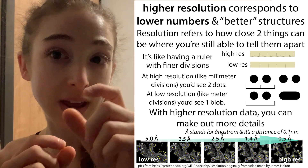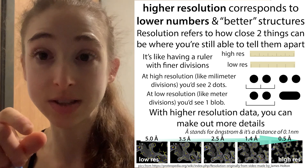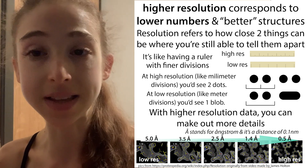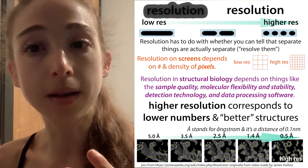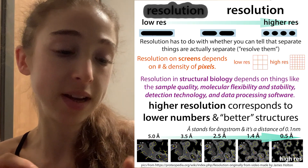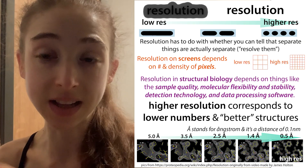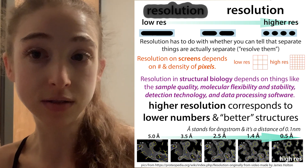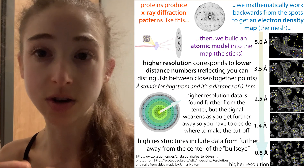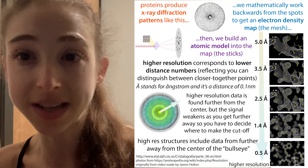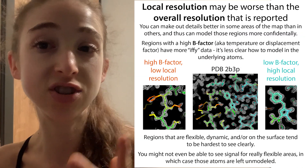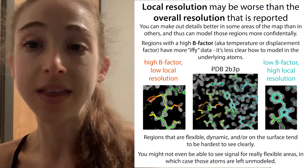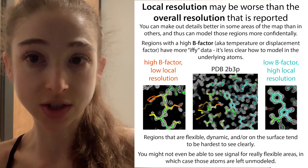When things merge together in the map, you can't tell whether a carbon belongs here or there, making it harder to place atoms in the model. Depending on your data collection method, there are differences in how resolution is determined — I'll cover that in more detail in a separate post. Typically you just get one overall resolution value for the entire structure.